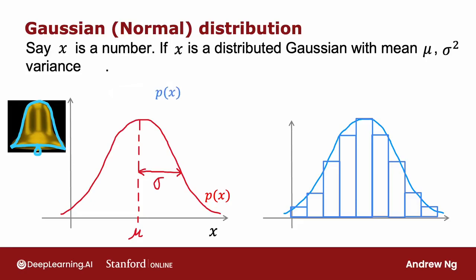The formula for p of x is given by this expression: p of x equals 1 over square root 2 pi, pi here is 3.14159, it's about 22 over 7, ratio of a circle's diameter to circumference, times sigma times e to the negative x minus mu squared, divided by 2 sigma squared. For any given value of mu and sigma, if you plot this function as a function of x, you get this type of bell-shaped curve that is centered at mu, with the width being determined by the parameter sigma.